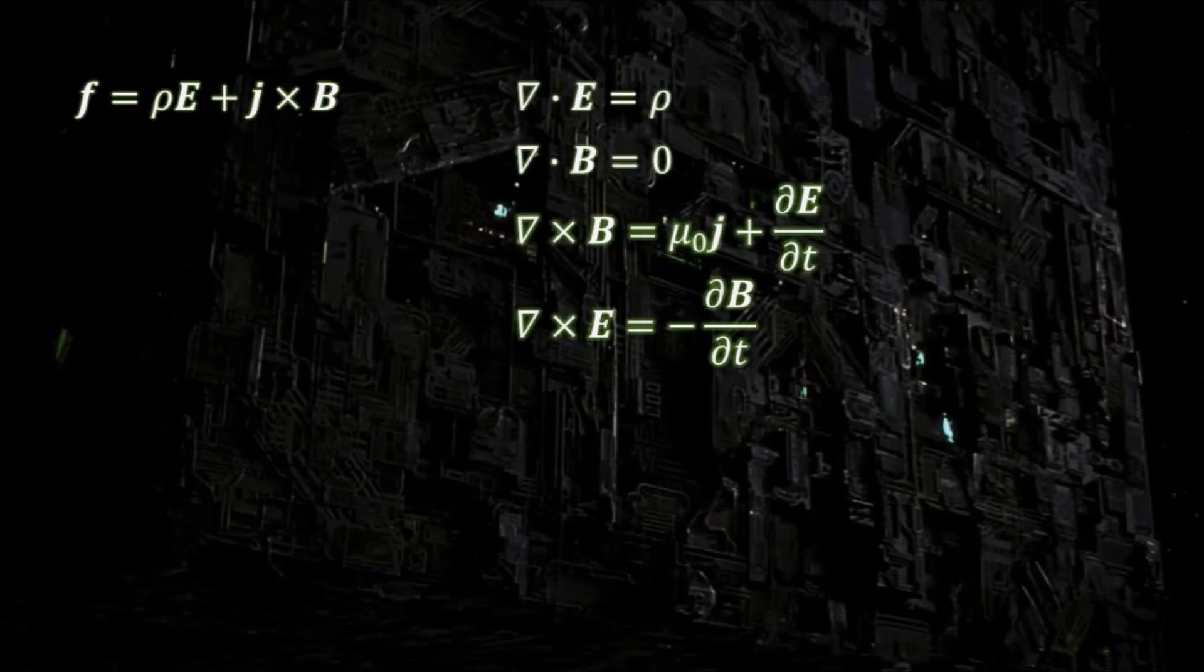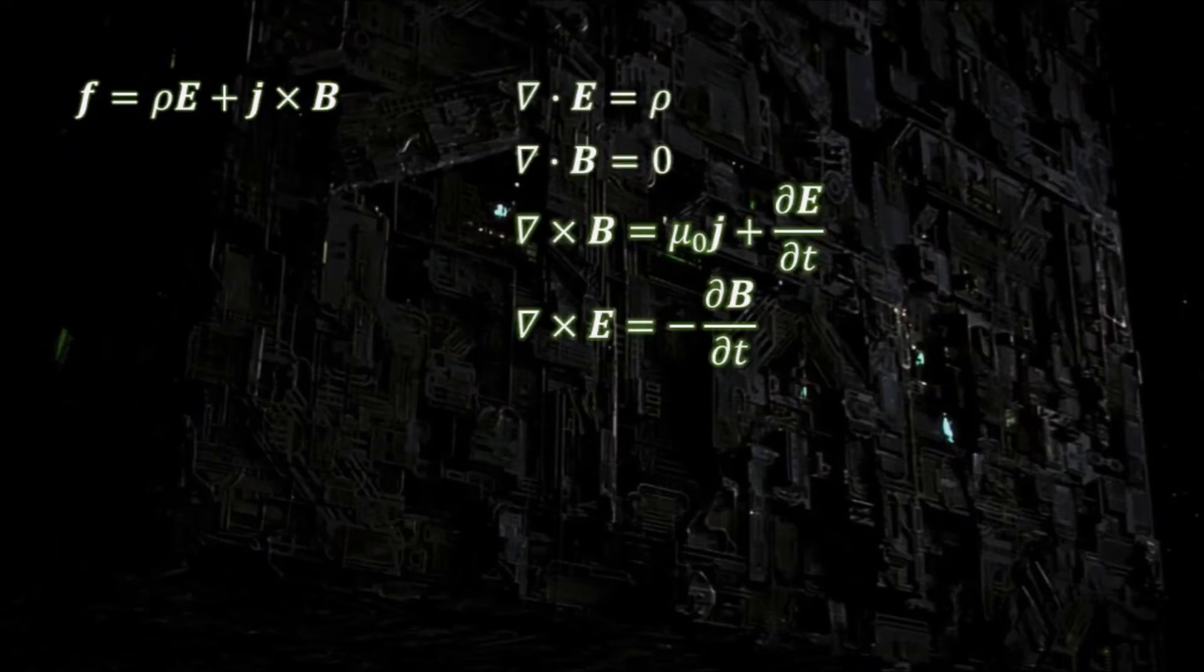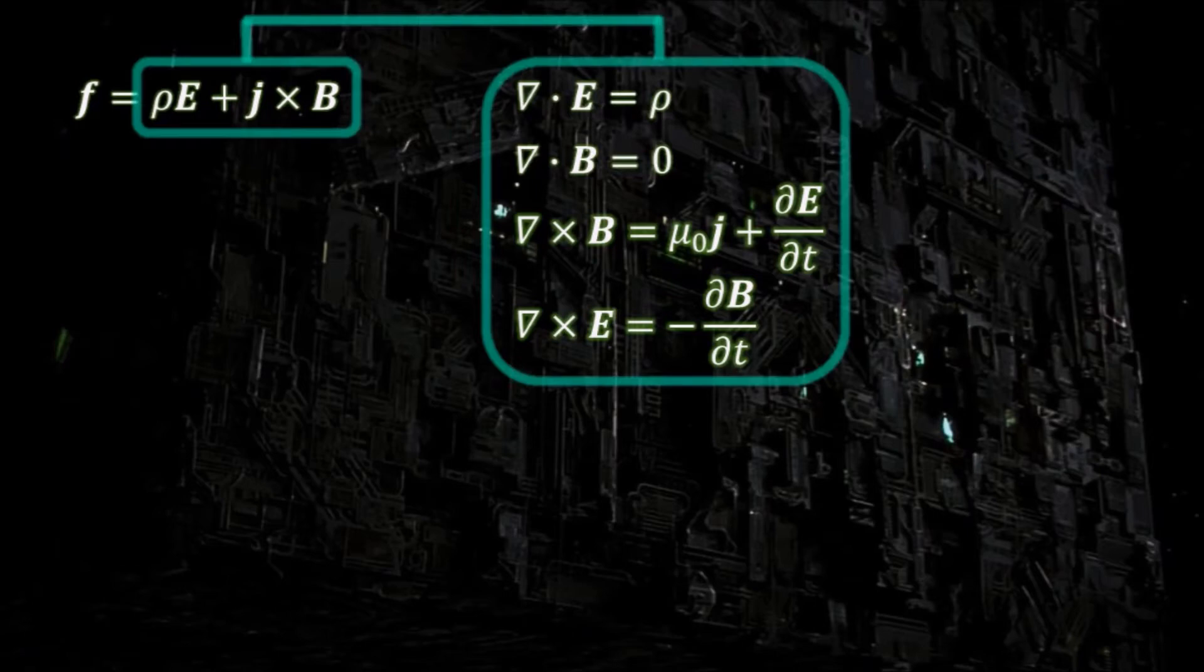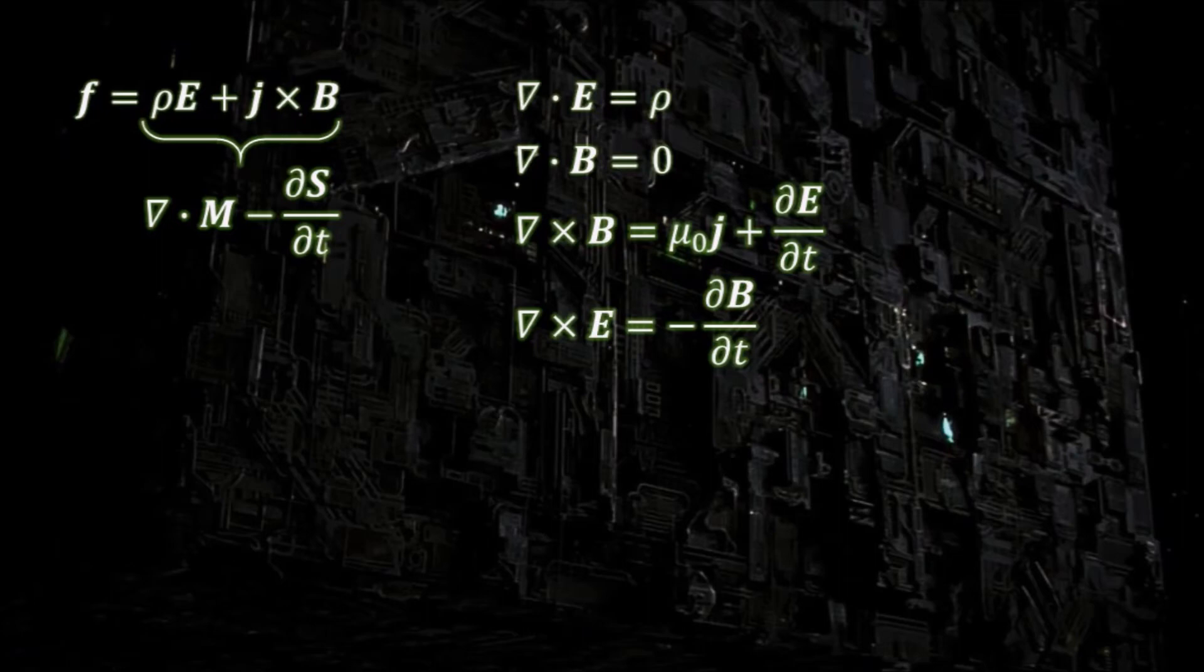Using Maxwell's equations and a few vector calculus identities, we can express the right-hand side in this form, where s is the Poynting vector and m the Maxwell's stress tensor defined like this. I will not go through the steps here, because to do so would be kind of redundant.